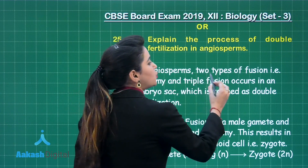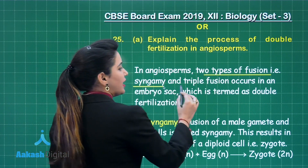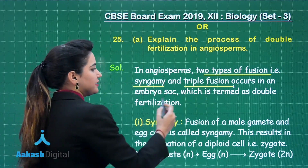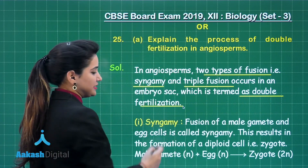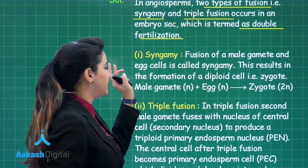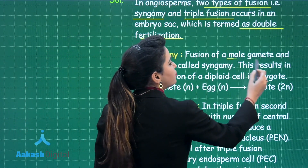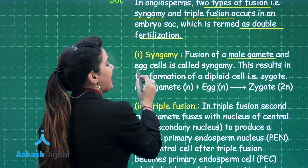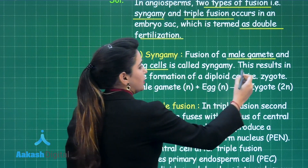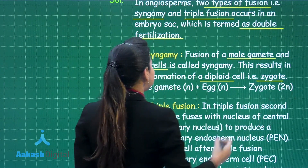In angiosperms, two types of fusion occur: number one is syngamy and the other one is triple fusion, both occurring in an embryo sac. Therefore it is termed double fertilization because two fusions are happening. Syngamy is the fusion of the male gamete and egg cell, which is the female gamete, and this results in the formation of a diploid cell known as the zygote.